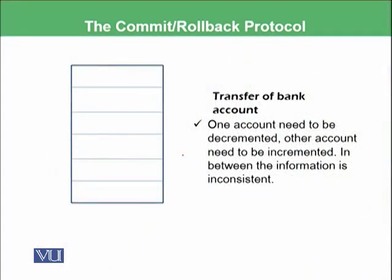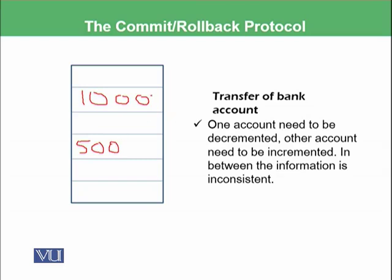This is the basic role of commit and rollback protocol. Let's see an example in a bit more detail. Here is an account of one person — Account A — which has a balance of 1000. And here is another account — Account B — which has a balance of 500. My instruction is to transfer 200 from Account A into Account B. This means the total amount would be 800 in Account A and 700 in Account B.